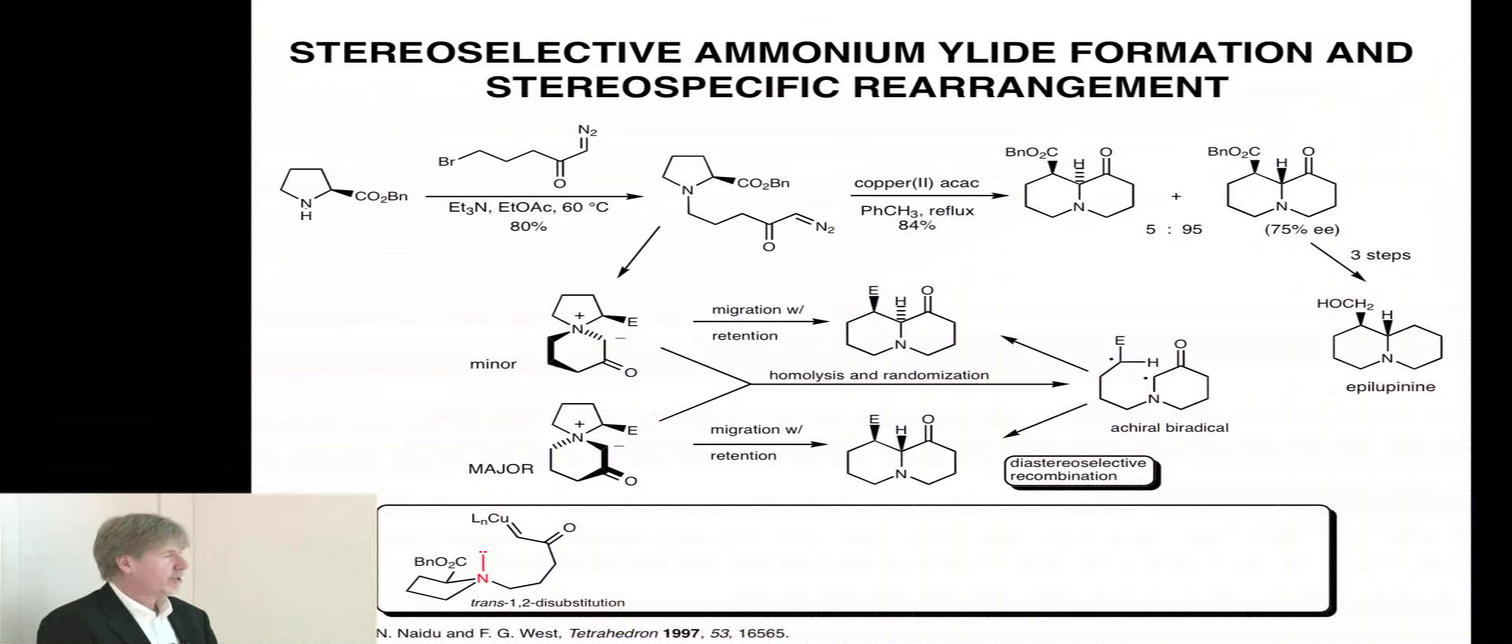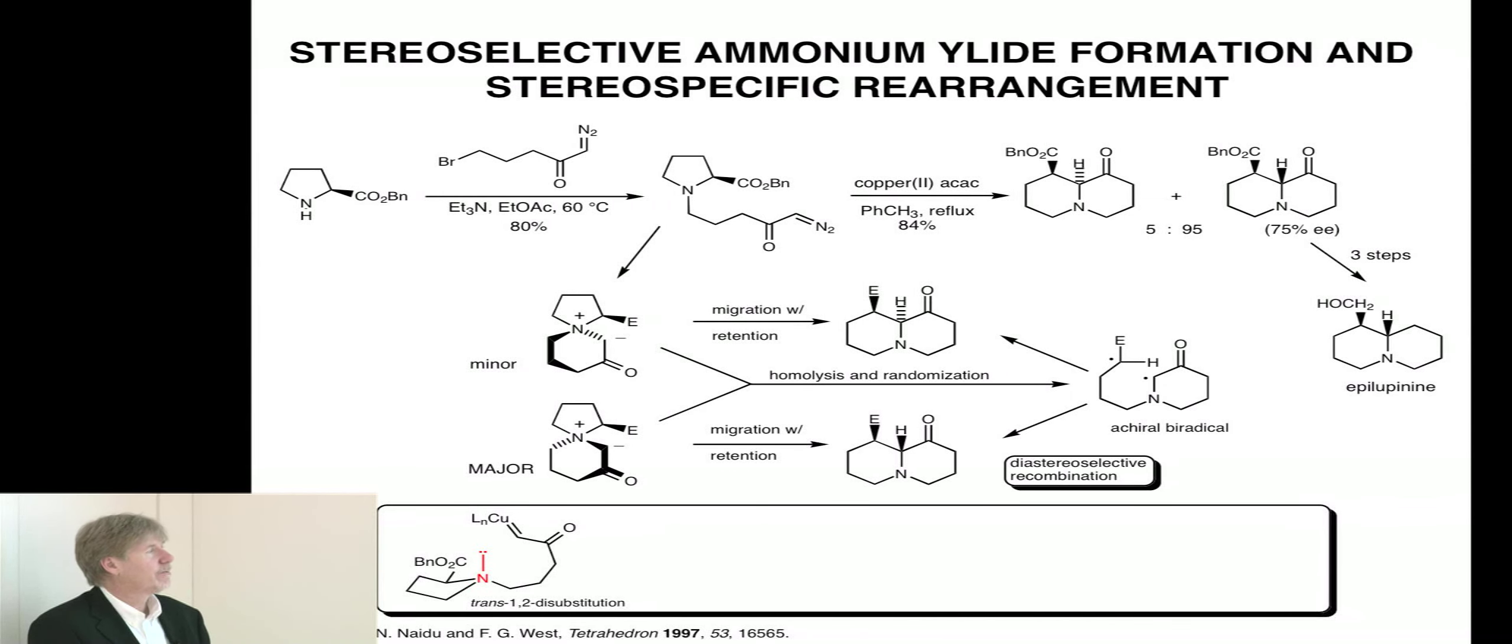In terms of why this should be the major ylid, I'd like you to think about the starting material. We've converted this into the metallocarbene, and now the question is, what about this five-member nitrogen ring?